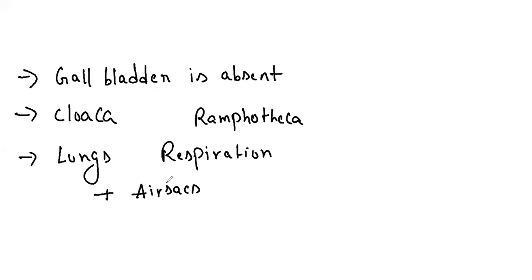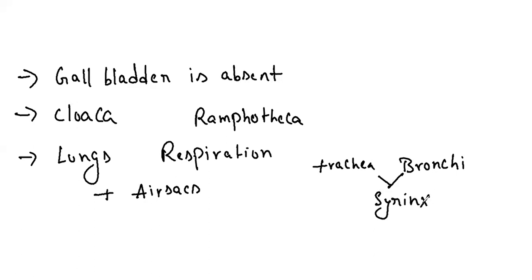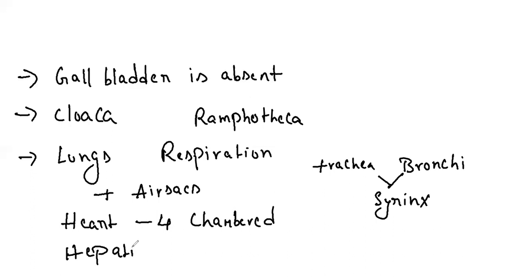Sound producing organs are present at the junction of trachea and bronchi — at this junction we have a sound producing structure called syrinx, because of which birds have a very nice and loud voice. The heart is four-chambered. Hepatic portal system is very well developed, but the renal portal system is absent for both mammals and birds.